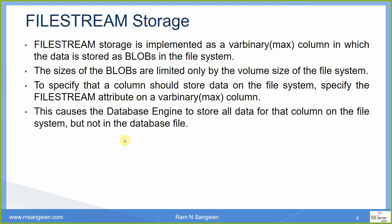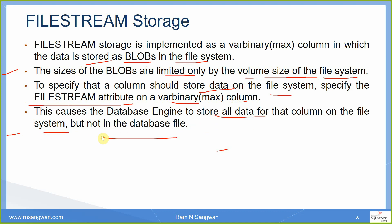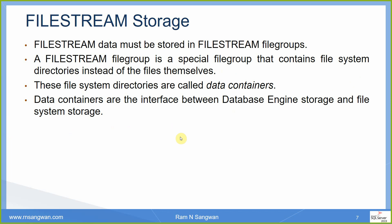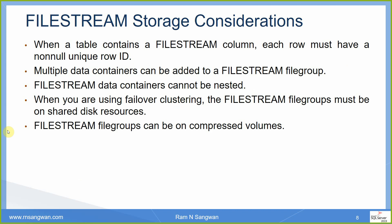FileStream storage is implemented as a VARBINARY column in which data is stored as binary large objects in the file system. The size is limited only by the volume size of the file system, because files can grow to any size. To specify that a column should store data on the file system, specify the FileStream attribute on the VARBINARY column. This causes the database engine to store all data for that column on the file system, not in the database file. You specify a path where the data of that column will go.